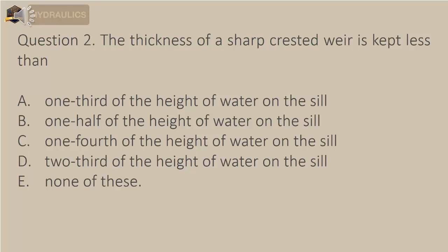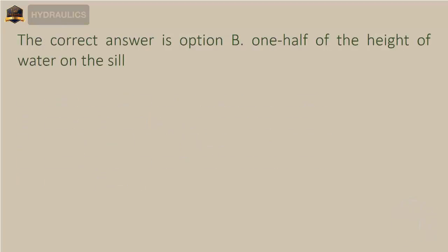Question 2: The thickness of a sharp-crested weir is kept less than — A) one-third of the height of water on the sill, B) one-half of the height of water on the sill, C) one-fourth of the height of water on the sill, D) two-thirds of the height of water on the sill, E) none of these. The correct answer is option B: one-half of the height of water on the sill.